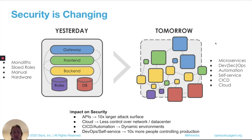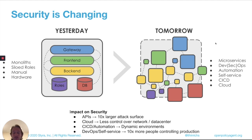If you think about DevOps and self-service, we end up with just more people who are in control of our production applications and production infrastructure. That kind of process change, that kind of organizational change, again has tremendous impact on security. You've got more people able to execute a broader range of APIs and functionality in far more dynamic environments, when we have even fewer controls over the actual hardware that is running all of that.